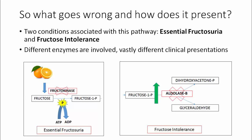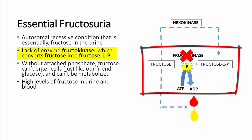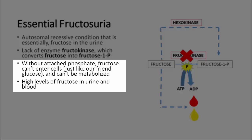The two main conditions associated with this pathway are essential fructosuria and fructose intolerance. For each, different enzymes are involved and they typically produce vastly different clinical presentations. Essential fructosuria is an autosomal recessive condition that, as the name suggests, involves the presence of excess fructose in the urine. As highlighted in the diagram, this disorder involves a lack of the enzyme fructokinase, which normally converts fructose into fructose-1-phosphate using ATP. Without this enzyme, fructose cannot be phosphorylated, cannot enter the cell, and therefore cannot be metabolized, remaining at high levels in the blood and ultimately being excreted in the urine.